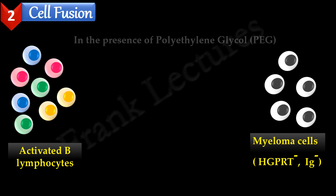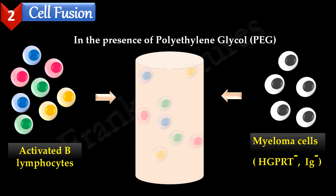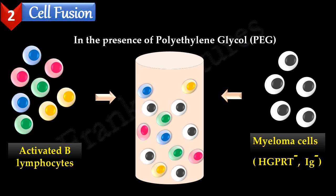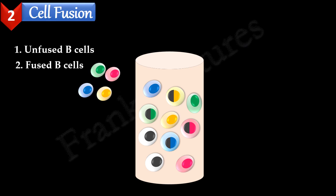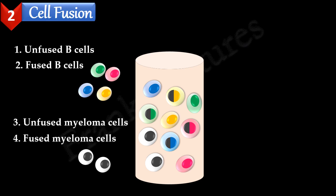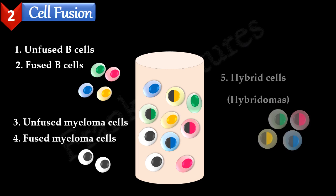Cell fusion is done by mixing two types of cells in the presence of the chemical fusogen polyethylene glycol. As a result of cell fusion, we will have five types of cells: unfused B cells and fused B cells; unfused myeloma cells and fused myeloma cells; and hybrid cells formed by fusion of an activated B cell and a myeloma cell. These hybrid cells are also known as hybridomas. In our illustration, we have four types of activated B cells, each specific to one of the four epitopes on the antigen, so the hybrid cells will also be of four types.